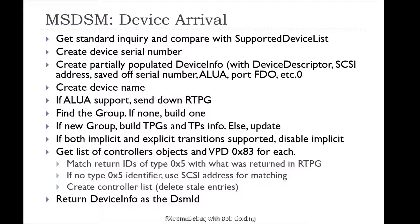This supports both implicit and explicit transitions. For devices that support it, the DSM will disable implicit/explicit transitions — the DSM controls the state of the path, whether standby, unavailable, or active optimized. An implicit report target group is sent and information is returned based on what the device server says. It gets a list of controller objects and VPD page 83 data for each, matching vendor/product IDs with target port information returned in the report target group. It will create the control list and put the device on its internal control list, returning the device info as a DSM ID back to MPIO.